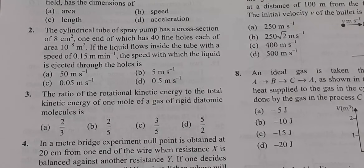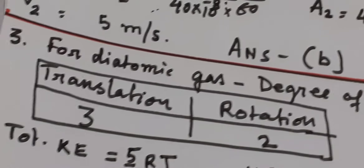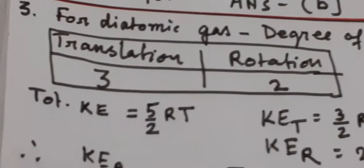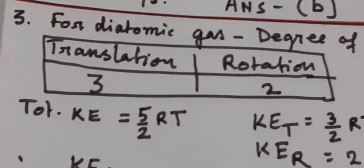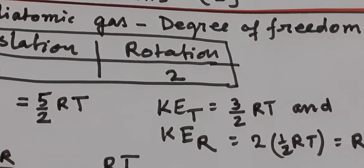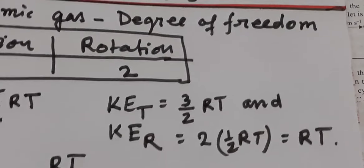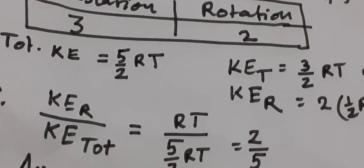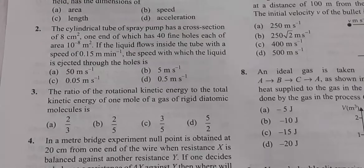The ratio of rotational kinetic energy to total kinetic energy of one mole of a rigid diatomic gas: for rigid diatomic molecules, degrees of freedom = 5 (3 translational, 2 rotational). By the equipartition theorem, each degree of freedom has ½RT energy. Total energy = 5/2 RT, rotational energy = RT. The ratio = RT ÷ (5/2 RT) = 2/5. Answer B is correct.